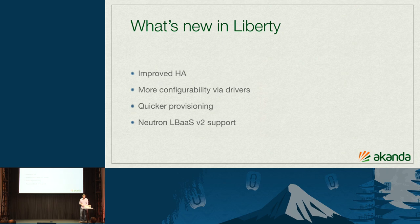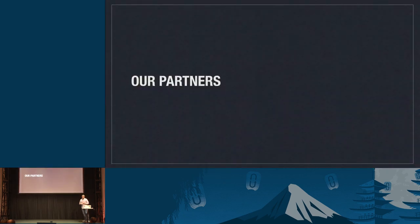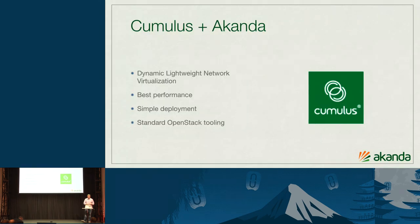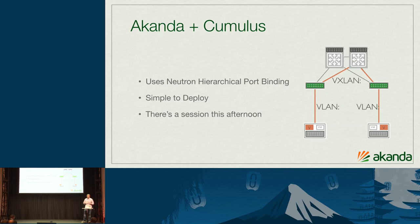Talking about our partners: with Aconda, we want to have a growing ecosystem, providing services and support while enabling you to mix and match what's available for your needs. One of the earliest partners is Cumulus Networks, providing access to their dynamic lightweight network virtualization — basically hardware-accelerated VXLAN. It's a very simple deployment model using standard OpenStack tooling, so it's easy to maintain and deploy without special tooling. We'll have a much longer session this afternoon about what this integration looks like.